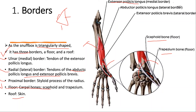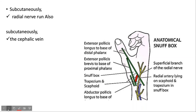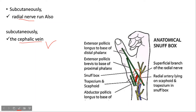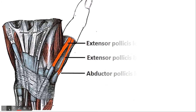The roof is covered by the skin, and within the skin the superficial structures are also included, such as the superficial branch of the radial nerve and the cephalic vein. These subcutaneous nerves and veins lying within the skin form the roof of the anatomical snuffbox, so we consider the radial nerve and the cephalic vein as part of the covering of the anatomical snuffbox.